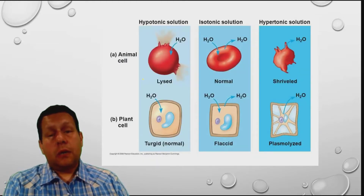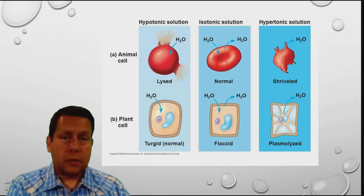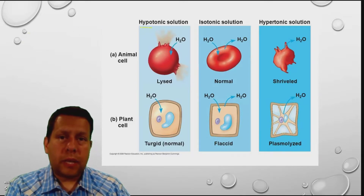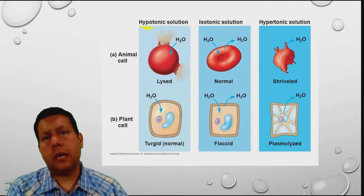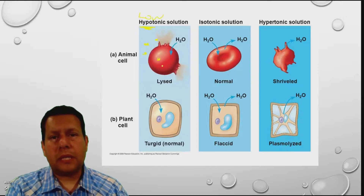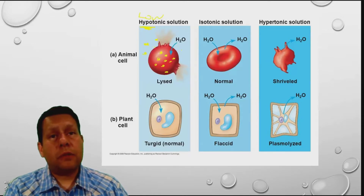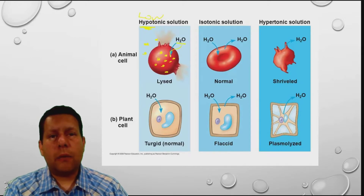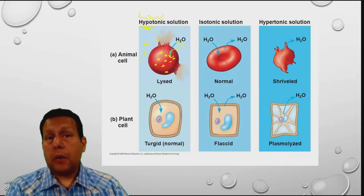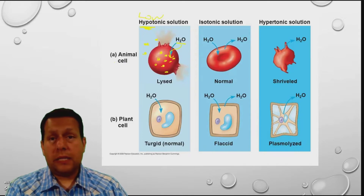Now let's look at what happens with real cells — an animal cell and a plant cell — in different solutions. In a hypotonic solution, hypo means low, so the solution has a low amount of solute. There are more solute particles inside the cell than outside. Wherever there's more solute, water is going to follow and rush right in. That's going to make the animal cell lyse — it's going to get bigger and bigger. The cell membrane is strong, but not that strong, and this cell will actually explode.